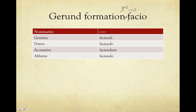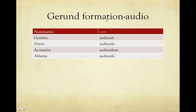Remember, with i-stems we want to keep that 'i' in the stem, so faciendi, faciendo, faciendum, faciendi — keep that 'e' also. And our fourth conjugation, audio, like the third i-o's, we're going to keep the 'ie': audiendi, audiendo, audiendum, audiendo. So they are declined, since this is a noun. They are all declined the same; the only difference is going to be the stem, determined by the conjugation. There are no plurals and there is no nominative.